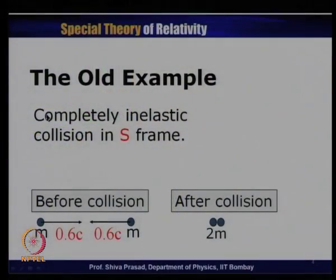Today we will work out some problems about collision. Specifically, we will revisit the earlier problem of collision with which we started — as a consequence of which we had decided that conservation of momentum would not be valid in all frames of reference unless we redefine the momentum. That is the way we led to the new definition of momentum. So let us look at this particular old example.